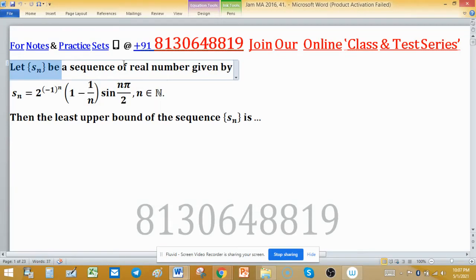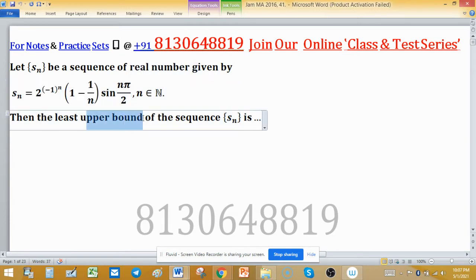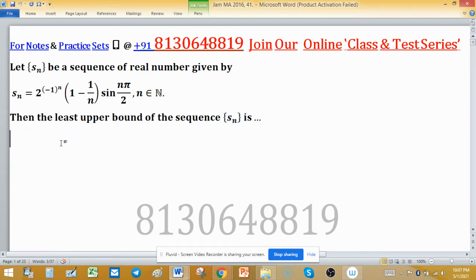Let SN be a sequence of real numbers given by this expression. Then the least upper bound of the sequence SN is: SN equals 2 raised to the power (-1)^n times (1 minus 1/n) times sin(nπ/2). This is given by SN, and sine is involved here, so what is the graph of sine x?